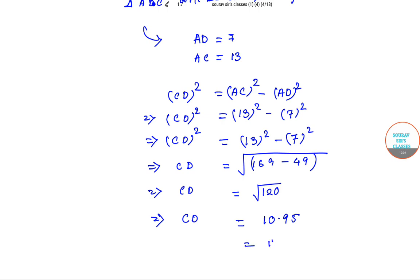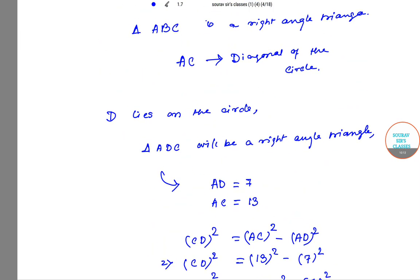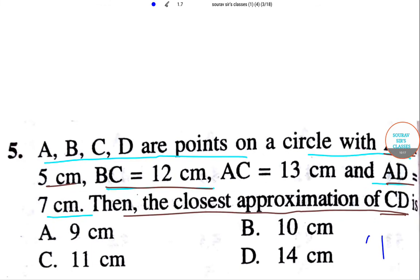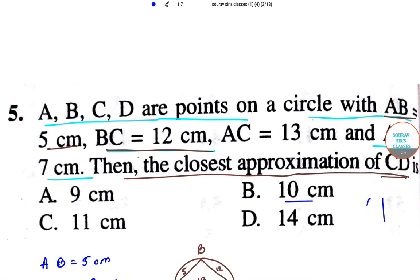So CD is 10.95, so we can write it as 11. Let's see what we have in our options. Yes, we have 10 centimeter, but it was 10.95, so hence we can take 11 centimeter as our answer. Thank you for watching this video.